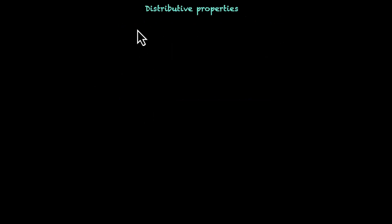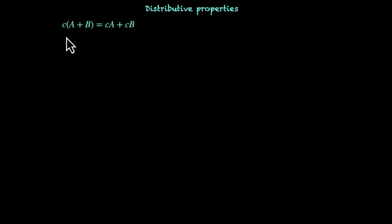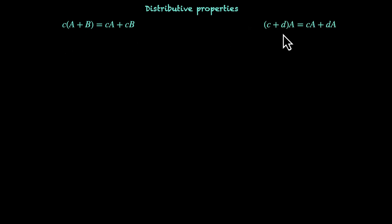Let's look at the next one: distributive properties, and we have two of them. Either we can distribute the scalar or we can distribute the matrix. If you distribute the scalar, you have C times (A plus B) equals C times A plus C times B. And if you distribute the matrix, you have (C plus D) times A equals C times A plus D times A.